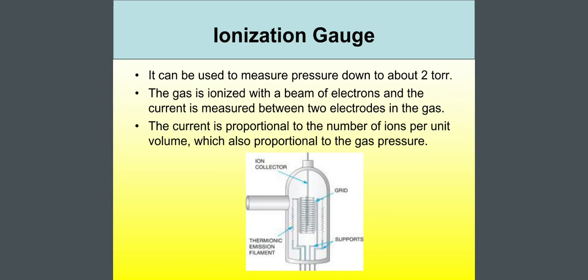Next topic, ionization gauge. It can be used to measure pressure down to about two torr. The gas is ionized with a beam of electrons and the current is measured between two electrodes in the gas. The current is proportional to the number of ions per unit volume which also proportional to the gas pressure. Look at the figures. Here you can see the ion collector, grid in the middle, thermionic emission filament outside the grid and as well as the supports.